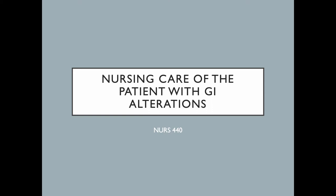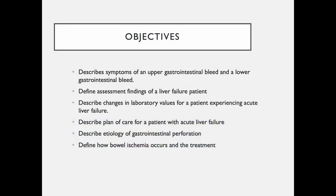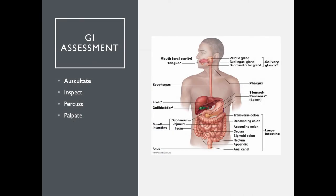We're going to talk about GI alterations. Here are the objectives for today — you can review those at your leisure. When we do a GI assessment, we always start with auscultation. The idea is to put auscultation first so you remember not to start palpating or percussing the belly before you listen, because doing so can mess up the bowel sounds and make them more active than they really are.